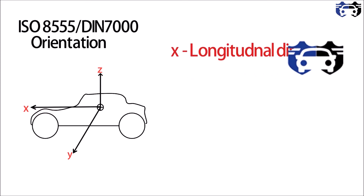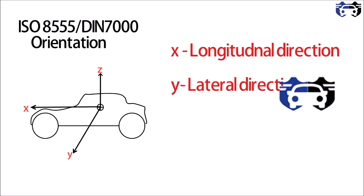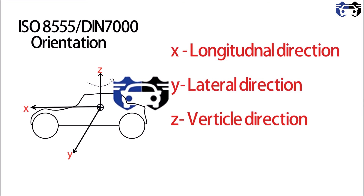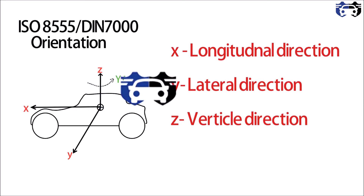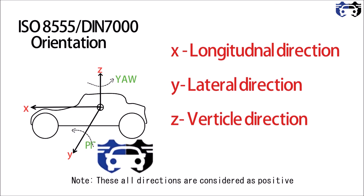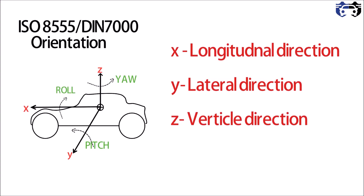X is called the longitudinal direction, y is called the lateral direction, and z is called the vertical direction. The torque about z in the anticlockwise direction is called yaw. The torque about y in the anticlockwise direction is called pitch, and the torque about the x-axis in the anticlockwise direction is called roll.